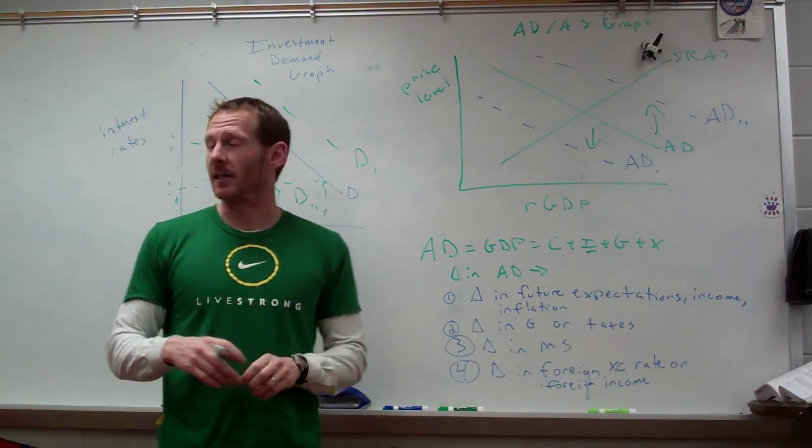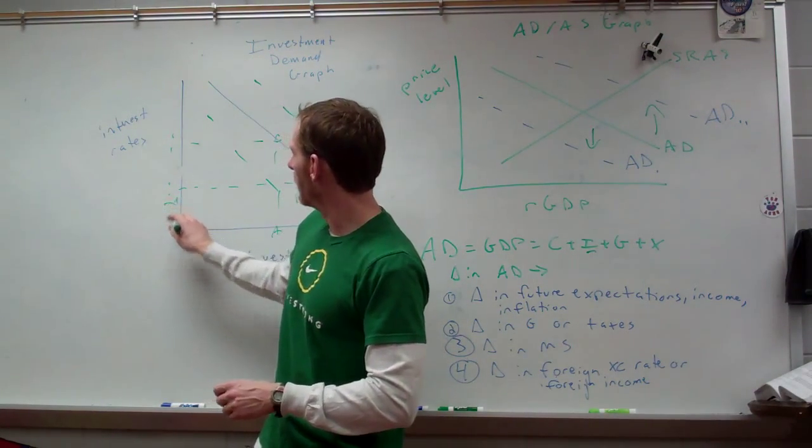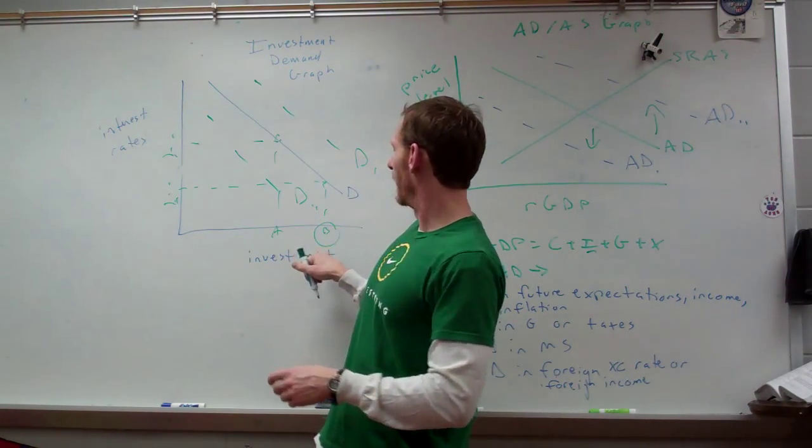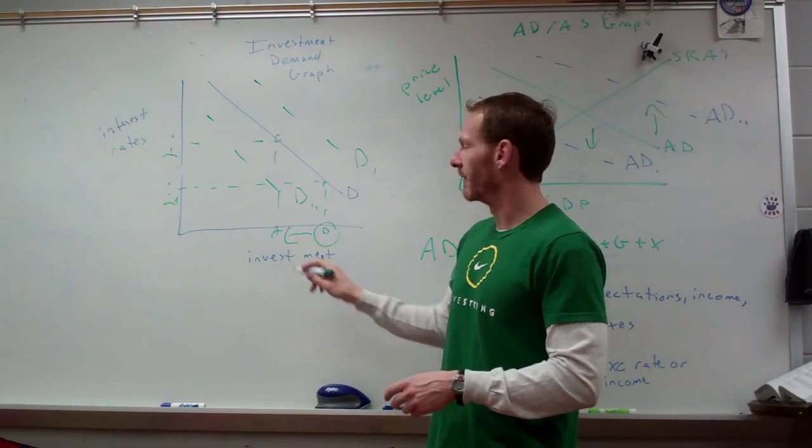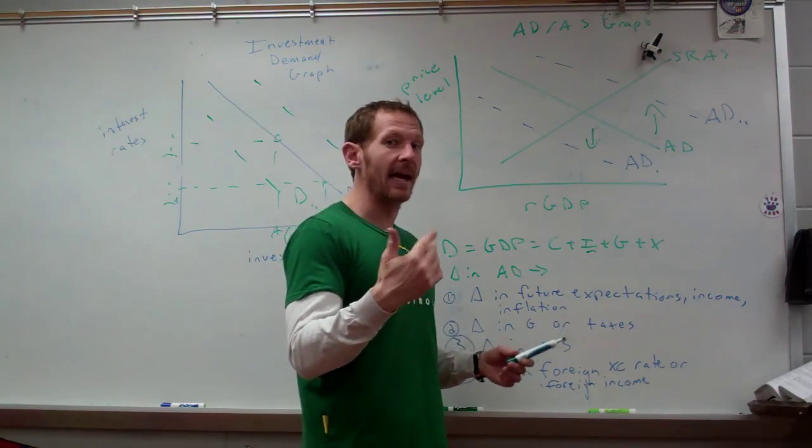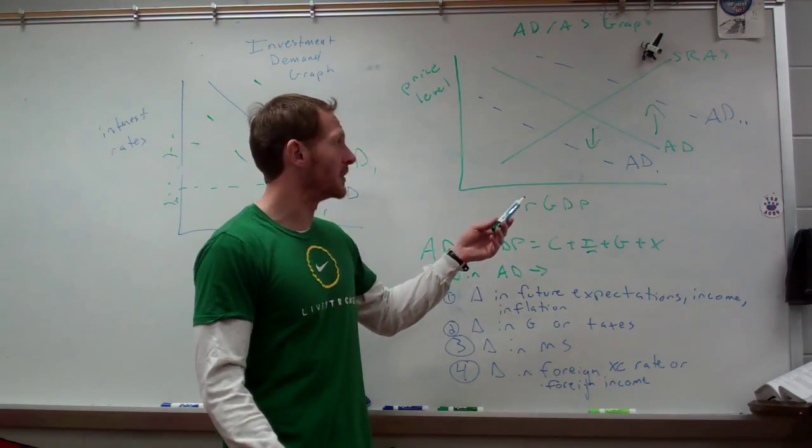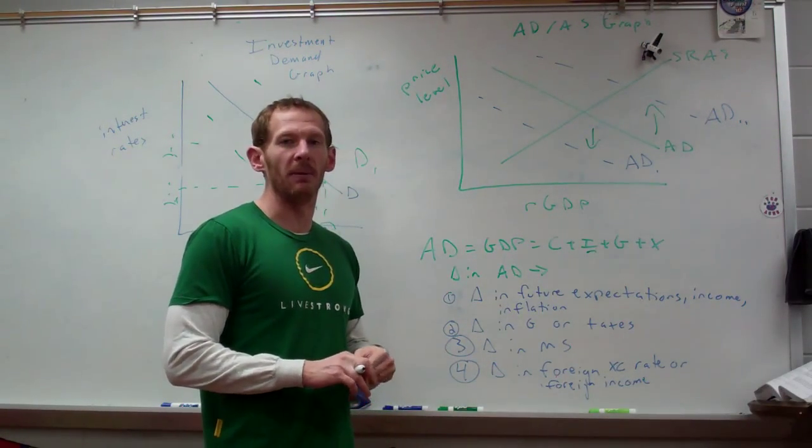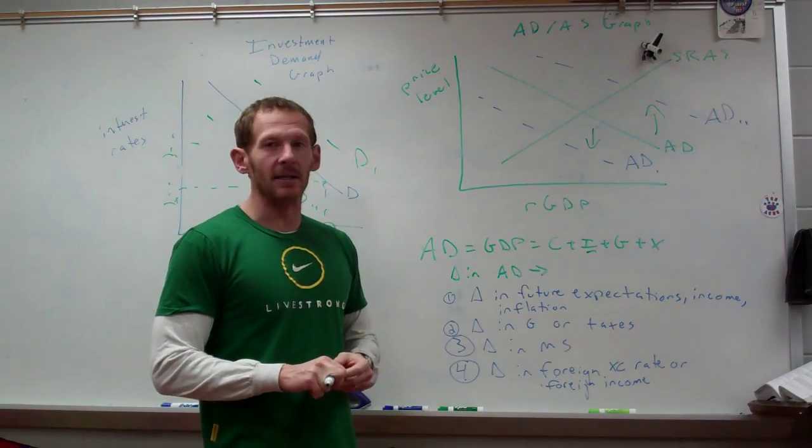If there was a decrease, let's say the interest rates went up from I sub 2 to I, and we went from investment level B to investment level A, then you might see that eventually make its way through the GDP and the I function, the investment function of GDP would suffer, bringing us to AD sub 1.